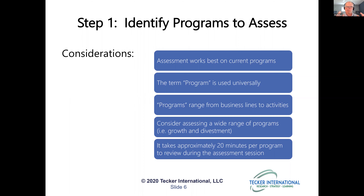One common result is the combining and consolidation of programs — making sure we're not just adding new things but looking at how we can most efficiently utilize resources and serve members. The first step in the process is to identify those programs to assess. Looking at the comprehensive portfolio — that term 'program' is used universally — is a really important part of this process, so you have an objective measure for all programs and you're looking at the full portfolio.